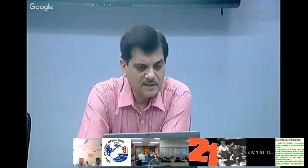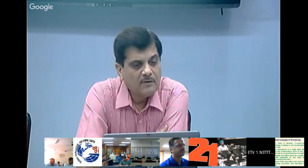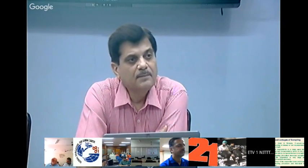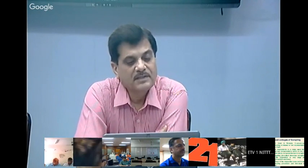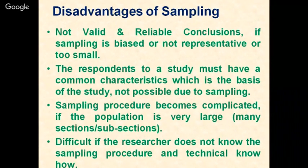The disadvantages of sampling are that research will not provide valid and reliable conclusions if the sampling is biased, not representative, or the sample size is very small. This will not give a true picture of the population. In research, respondents must share a common characteristic that is the basis of the study, and due to sampling we assume characteristics are common, but there are many parameters and factors which may influence the findings.